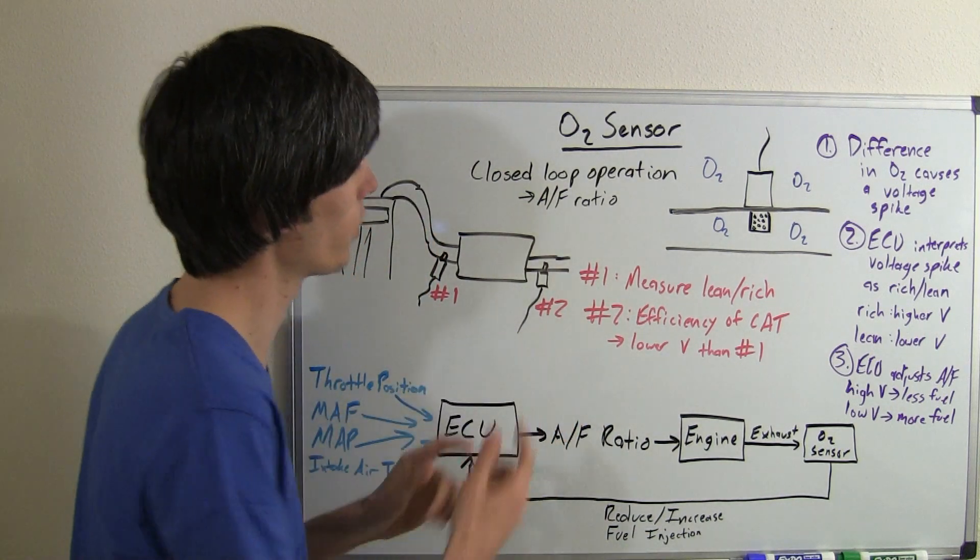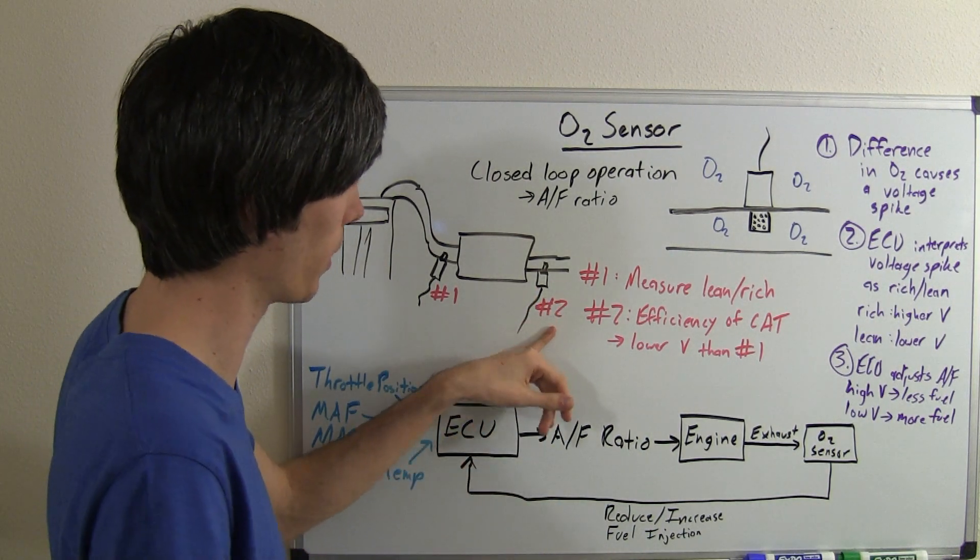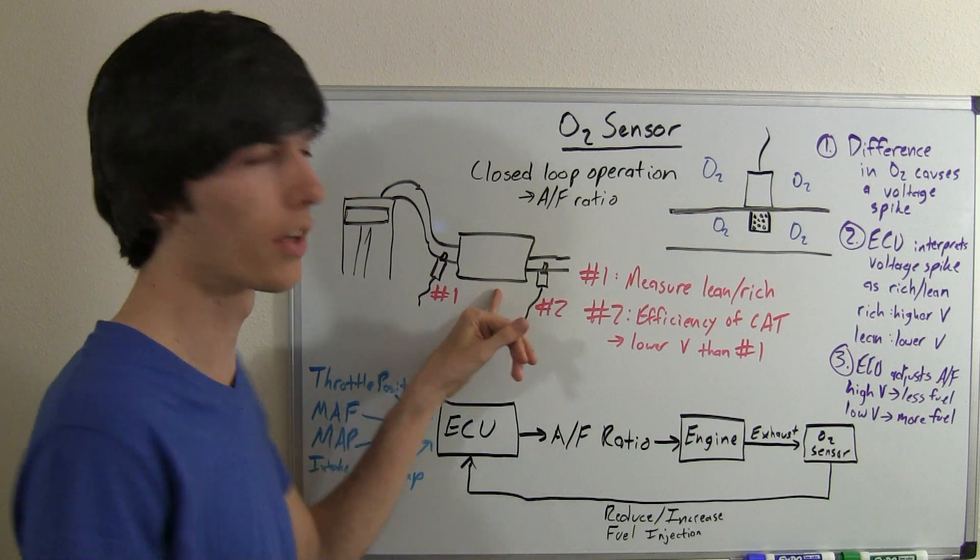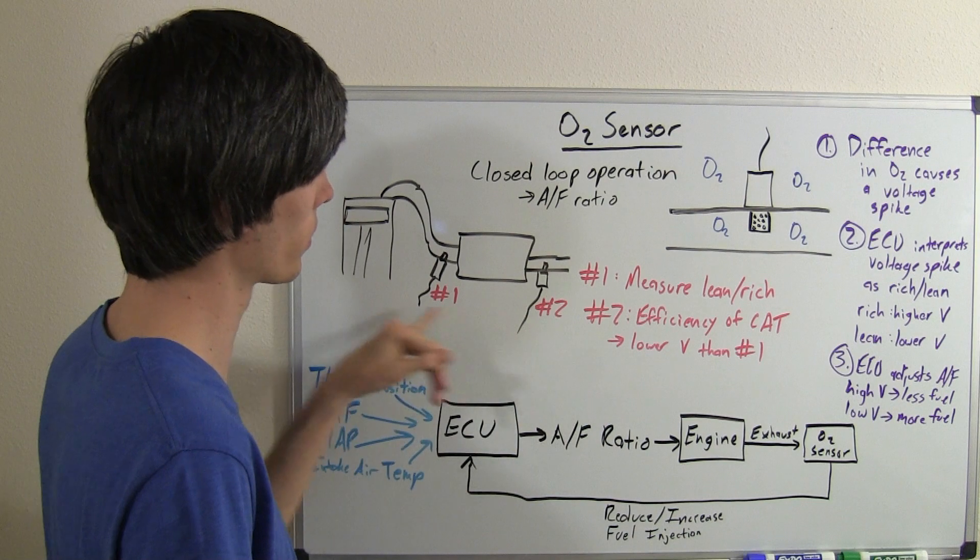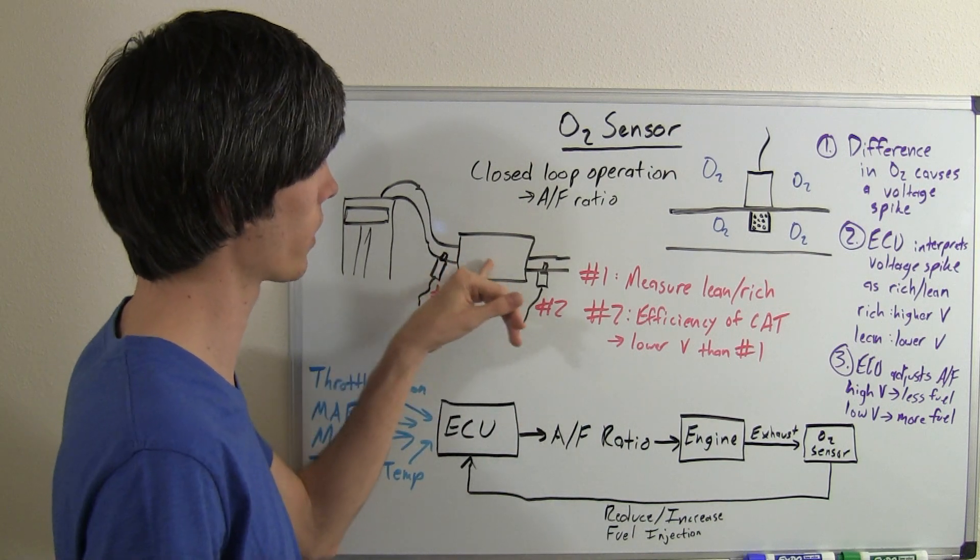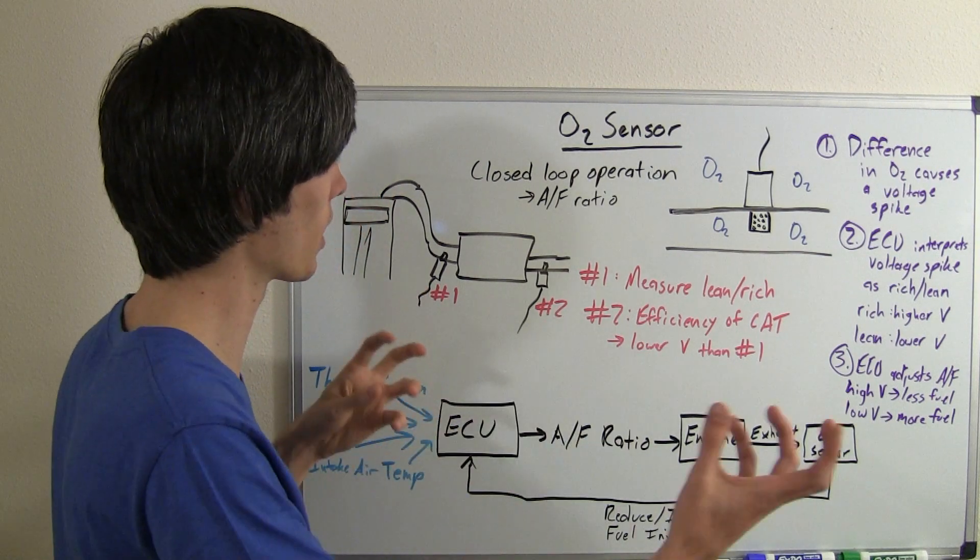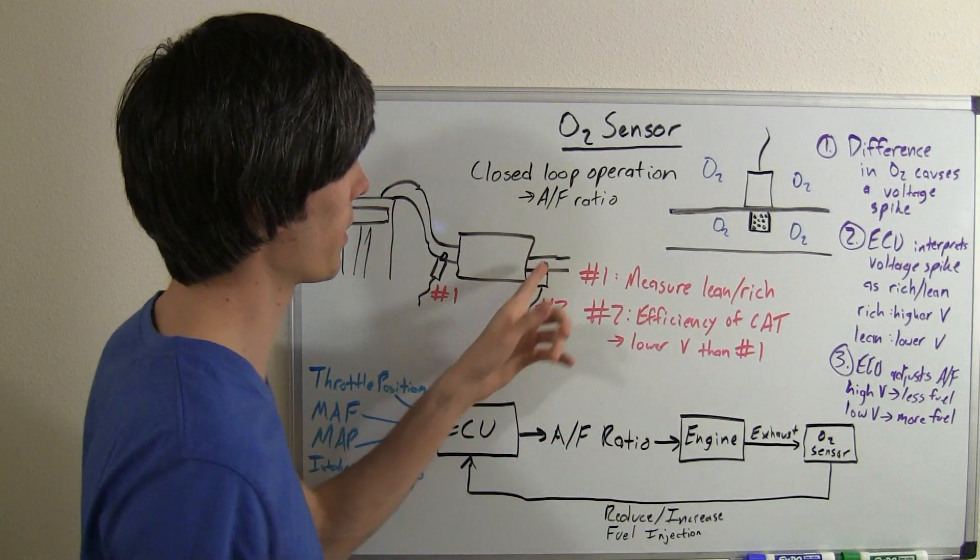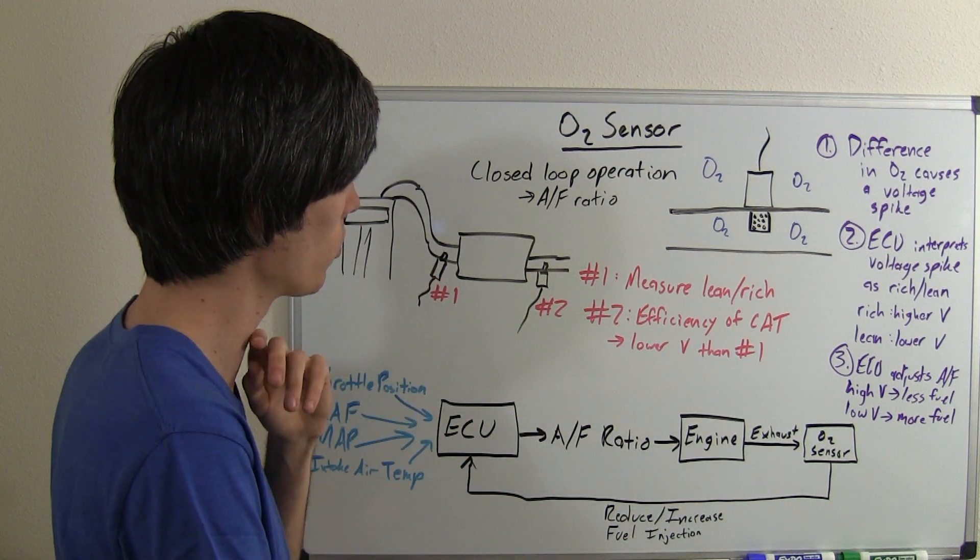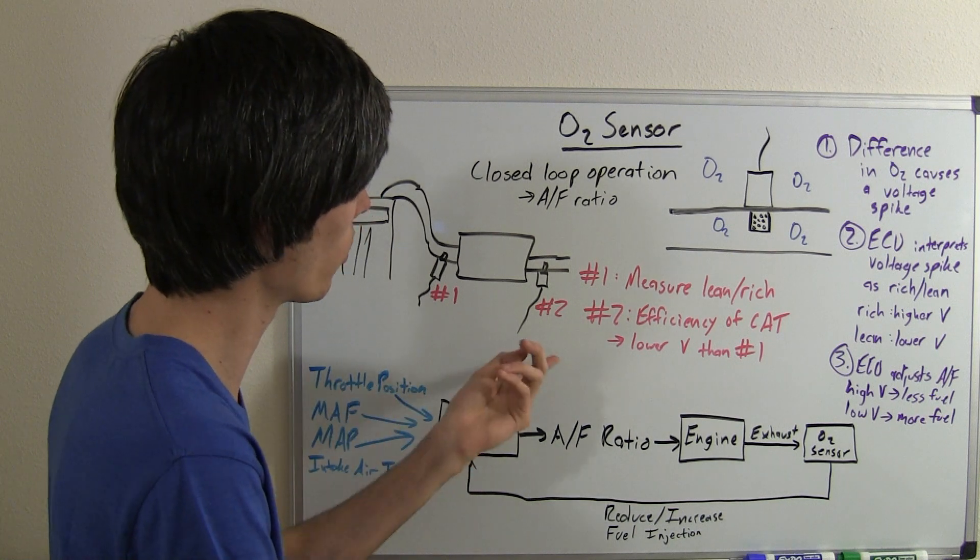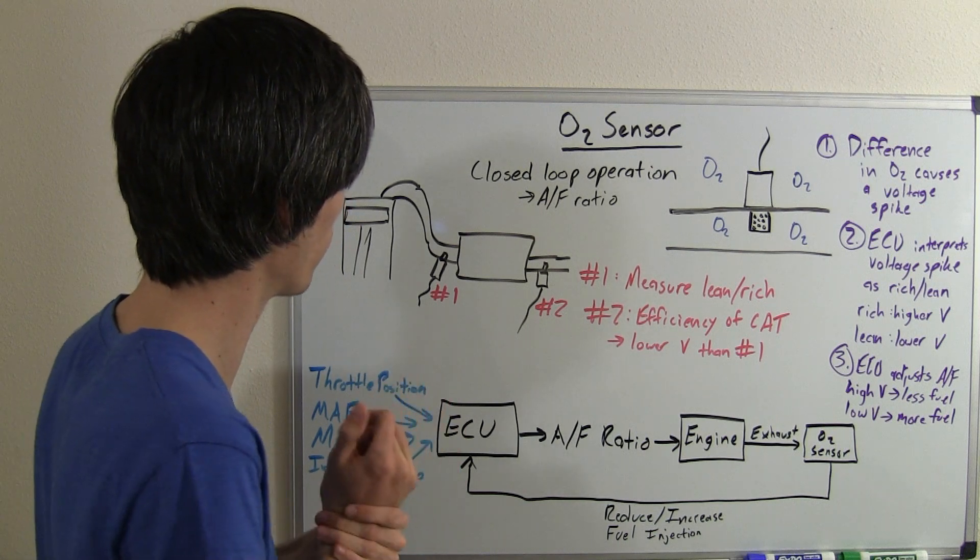The other thing here, if you haven't watched my video on catalytic converters, this would make a little more sense, but you're going to have an oxygen sensor after the catalytic converter to measure the efficiency of the catalytic converter. This should read a lower voltage than the first one, because your catalytic converter is going to be taking your nitrogen oxides and breaking apart those oxygens, so you'll have oxygen coming out of this exhaust. You will have additional oxygen, and so that's what this will read. It wants it to be a low voltage, a lower voltage than the first one.